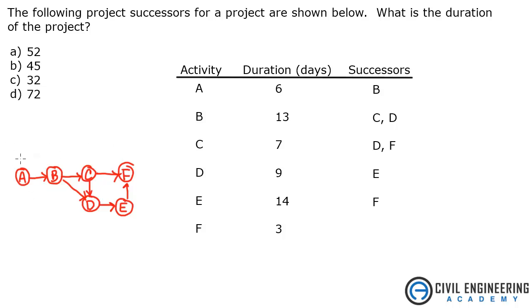Now let's write in the durations. Activity A is 6, B is 13, C is 7, D is 9, E is 14, and F is 3, where they all end up.